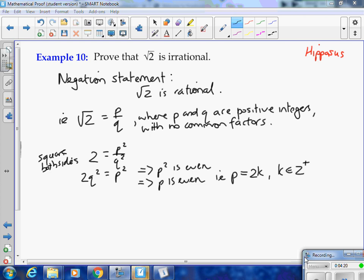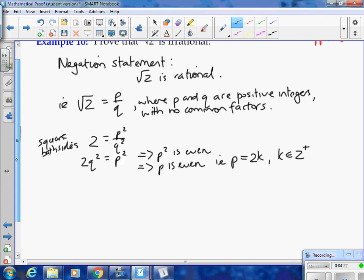So we've got p can be represented by 2k, so let's put this back in. 2q² is equal to (2k)², which becomes 4k², and if we divide through by 2, we get q² = 2k².